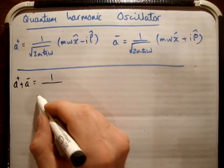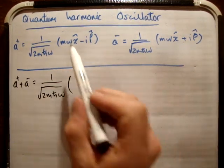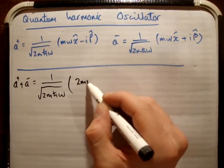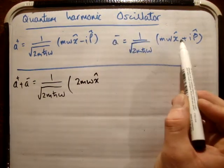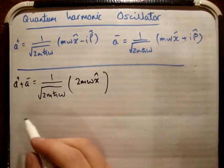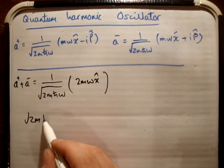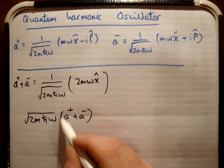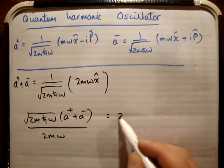Well, first of all, you can pull out root 2MℏΩ. And then you notice that if you add this and this, we're going to get 2M omega X hat, and the momentum components are just going to cancel. So we're trying to isolate for X. You can bring up the square root, so we get root 2MℏΩ times A plus plus A minus. Divide across by 2M omega, and that's equal to X hat.